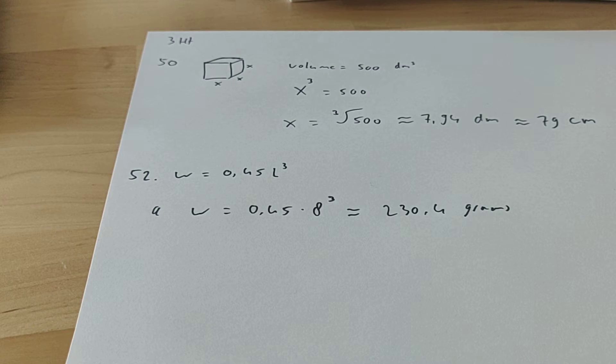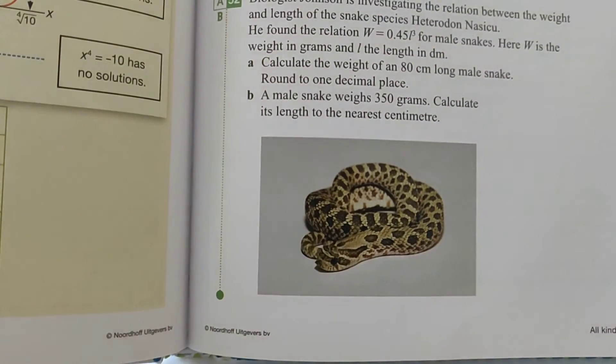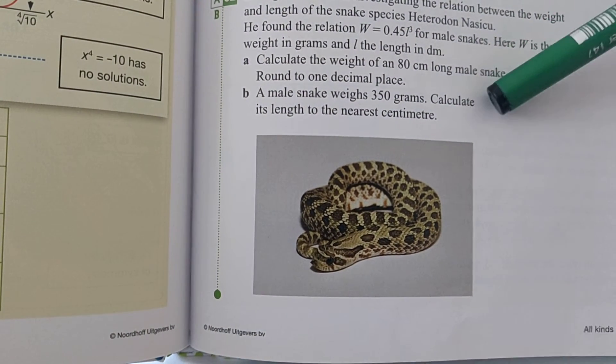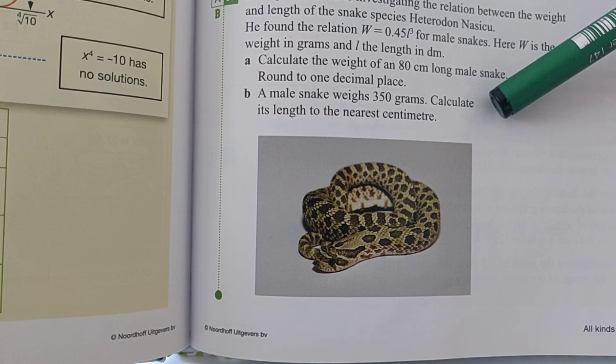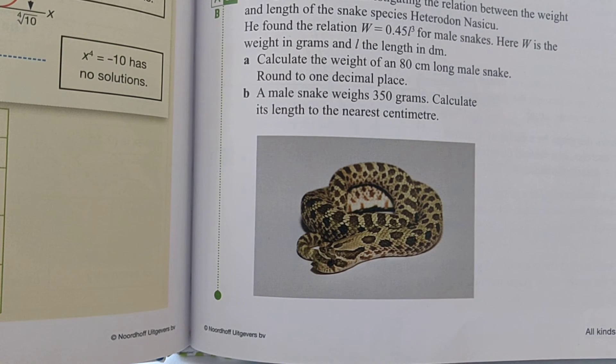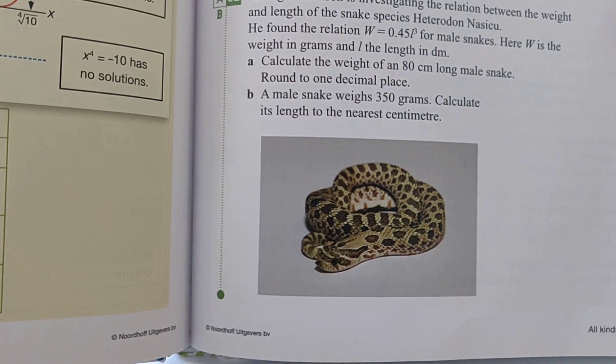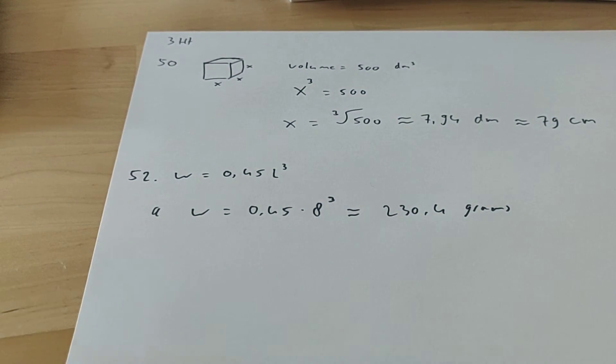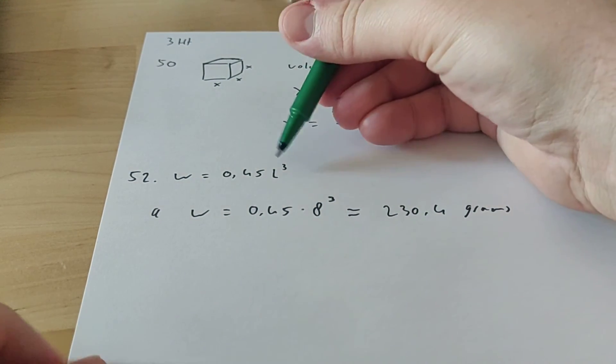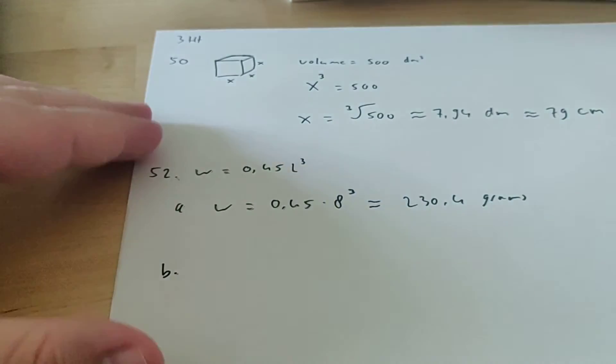Exercise B. Let me show it to you. Now we actually know how much a snake weighs. A male snake weighs 350 grams. Calculate its length to the nearest centimeter. So now we don't know what L is, but we do know what W is. So now we get an equation.